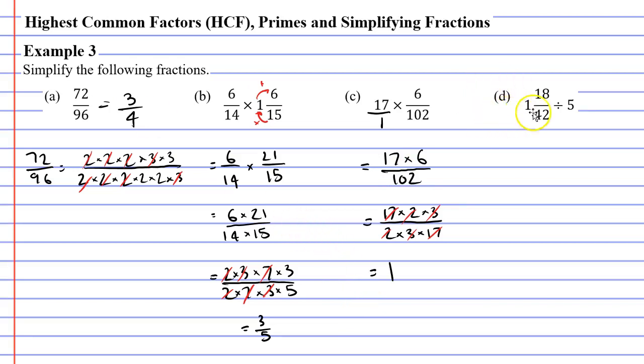Looking at question D now, we have a mixed numeral. It needs to be converted to an improper fraction. We do that by multiplying and then adding. So, 42 times 1 is 42 plus 18 is 60. So, our numerator is now 60. The denominator stays the same. It stays as 42. So, 60 over 42. And we're dividing this time by 5. We need them both to be fractions, so we'll make that 5 over 1.